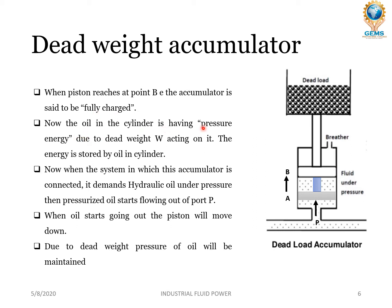Now the oil in the cylinder has pressure energy due to the dead weight W acting on it — the energy is stored by the oil in the cylinder. When the system demands hydraulic oil under pressure, the pressurized oil starts flowing out of port P. As oil flows out, the piston moves down due to the dead weight, and the pressure of oil is maintained. The piston automatically returns to its original position.